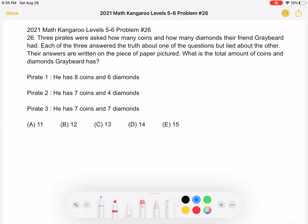Three pirates were asked how many coins and how many diamonds their friend Greybeard had. Each of the three answered the truth about one of the questions but lied about the other. Their answers are written on the piece of paper pictured. What is the total amount of coins and diamonds Greybeard has?